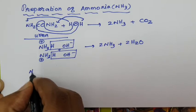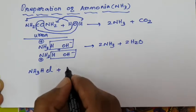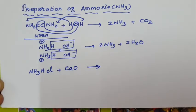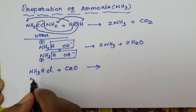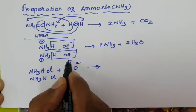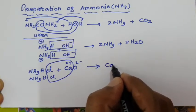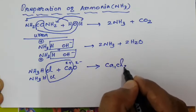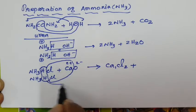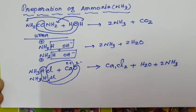Another example: ammonium chloride NH4Cl when treated with a basic oxide — calcium oxide CaO. Calcium is a 2+ ion and oxygen is a 2− ion. The chlorine atoms are removed as calcium chloride CaCl2. The hydrogen and oxygen are removed as H2O, followed by the formation of two molecules of ammonia NH3.